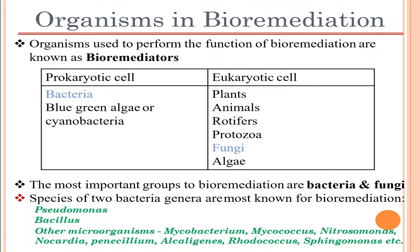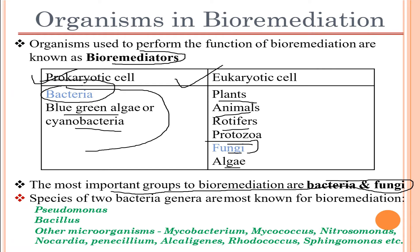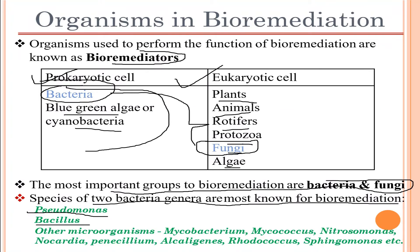Organisms in bioremediation are known as bioremediators. They include prokaryotic and eukaryotic cells. Prokaryotic cells include bacteria, blue-green algae, and cyanobacteria. Eukaryotic cells include plants, animals, rotifers, protozoa, fungi, and algae. The most important groups for bioremediation are bacteria and fungi. The most well-known bacterial genera are Pseudomonas and Bacillus, along with others such as Mycobacterium, Micrococcus, and Nitrosomonas.